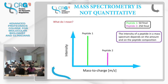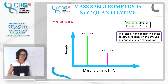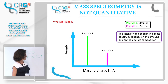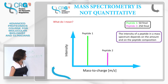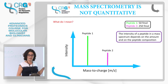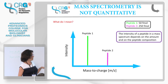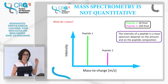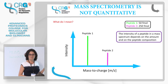Before starting, I need to say that mass spectrometry is not quantitative. What I mean is that, for example, if you have one peptide with this signal and another peptide with this signal, this does not mean we have more of one peptide than the other. It can happen that we have 50 femtomoles of one peptide and 250 femtomoles of another, because the intensity of a peptide in a mass spectrometer depends not only on the amount, but also on the peptide composition. Each peptide has a different response to the mass spectrometer and gives a different signal.